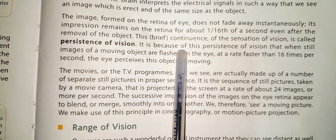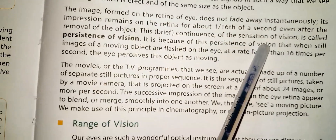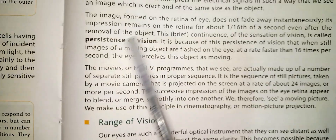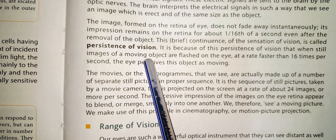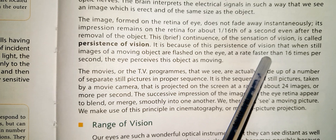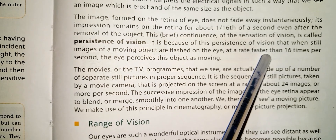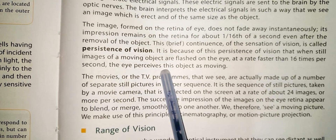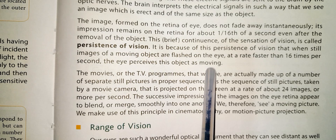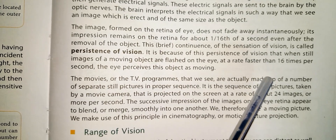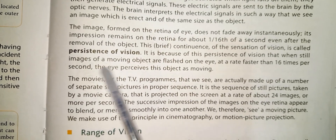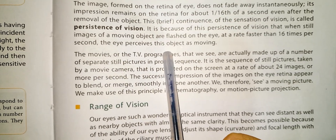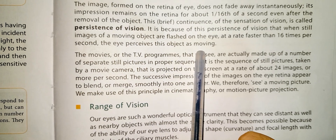It is because of the persistence of vision that when still images of a moving object are flashed on the eye at a rate faster than 16 times per second, the eye perceives the object as moving.